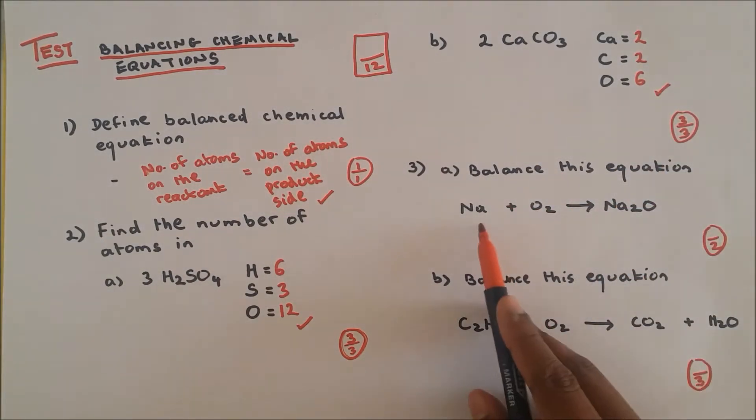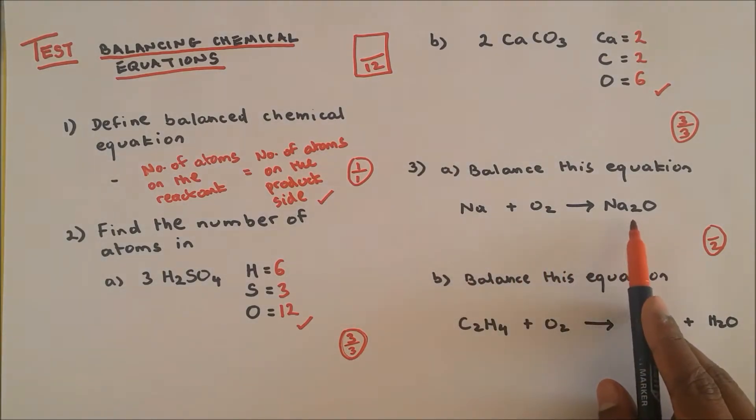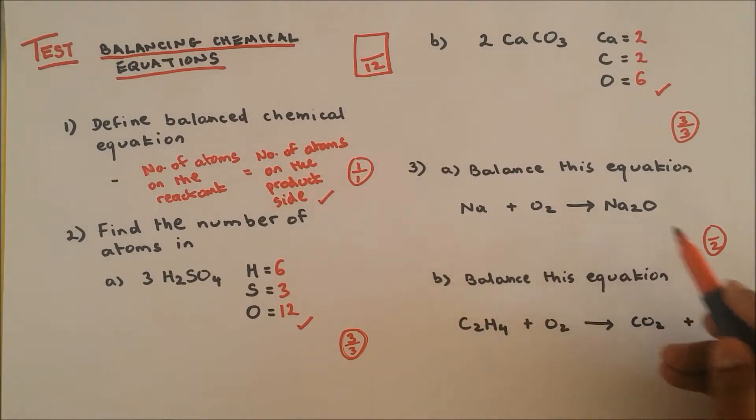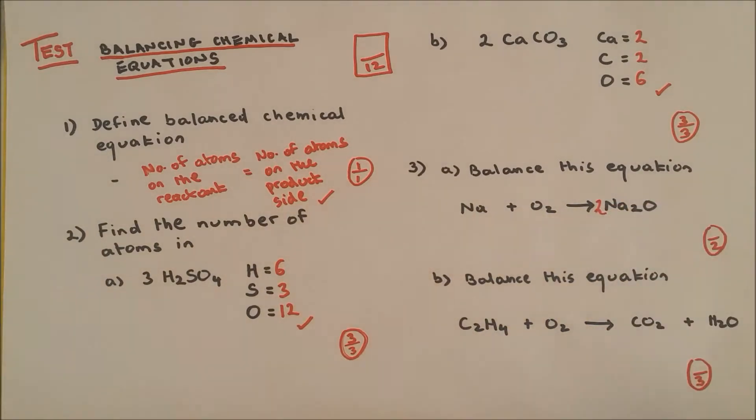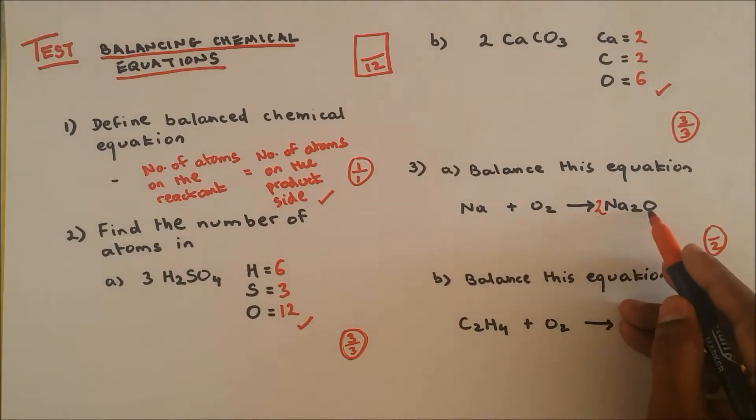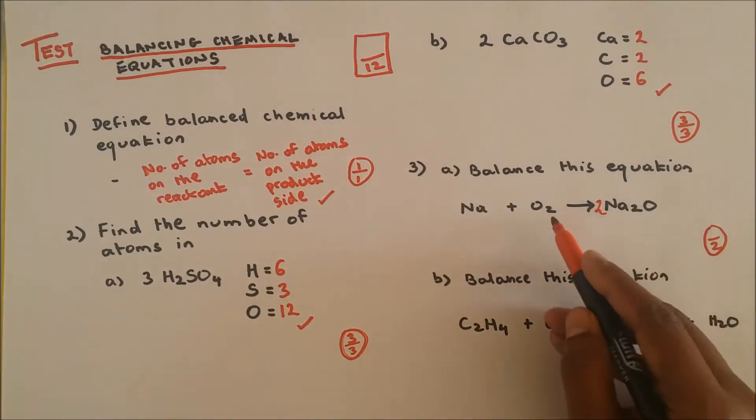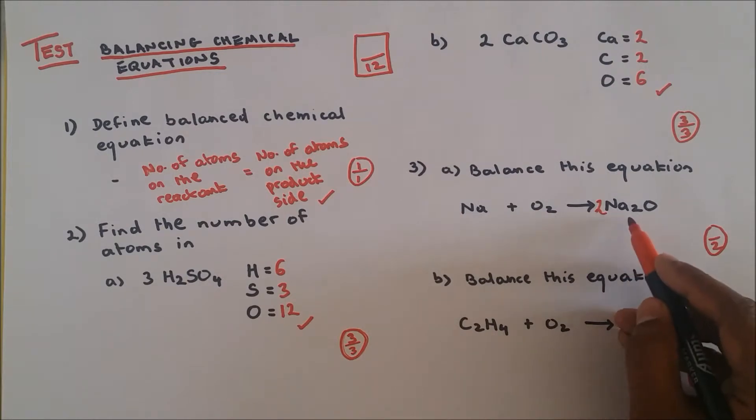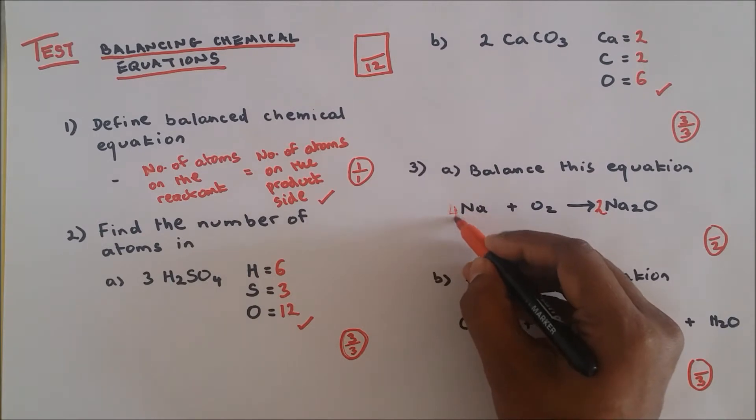Question number three: Balance this equation. Now sodium and oxygen is giving us sodium oxide. You have two atoms and two atoms of oxygen and one over here. So what do you do? You put a big two over here, so it's giving us two atoms of oxygen and we got two over here, that's nicely balanced. Now how many sodium do you have over here? Without the two over here is two, but with the two moles is bringing us to four atoms of sodium, so we put four over here. Two out of two, okay good.